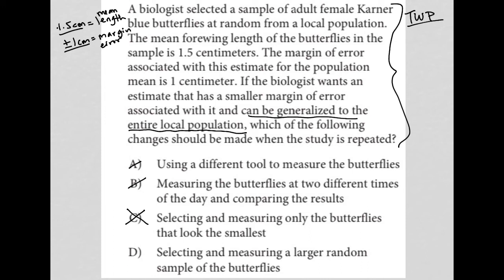Choice D, selecting and measuring a larger random sample of the butterflies. This is definitely the answer. I alluded to it before even seeing the answer, and that's just a general idea.